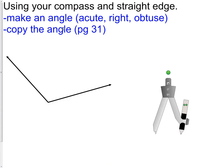What we're going to do is use our compass and a straight edge. We're going to make an angle which is acute, right, or obtuse. Then we're going to copy the angle.